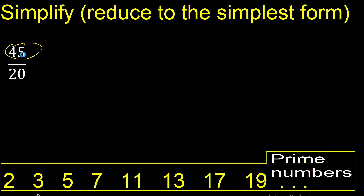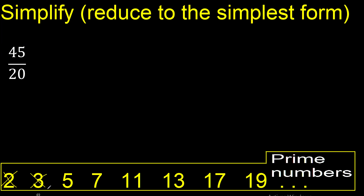Can 45 and 20 be divided by the same number? Cannot be divided by 2 because 45 cannot be divided by 2. Cannot be divided by 3 because 20 cannot be divided by 3. Can be divided by 5 — yes, divided by 5. 45 divided by 5 is 9, and 20 divided by 5 is 4.